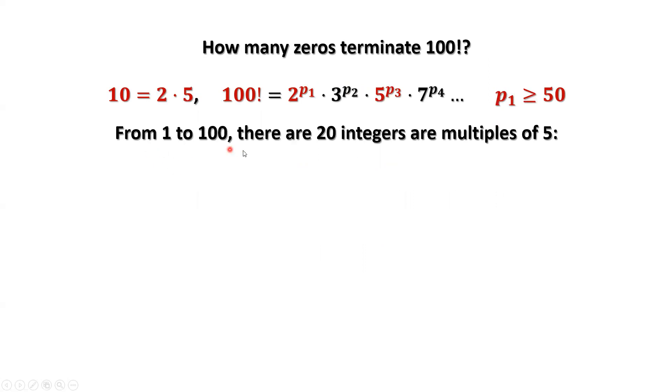From 1 to 100, there are 20 integers or multiples of 5. There are 5, 10, 15, 20, and so on until 95 and 100. So we have 20 integers here.